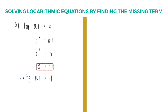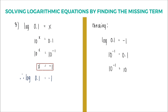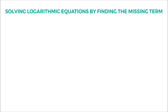Therefore, logarithm of 0.1 is equal to negative 1. To check, substitute x into the logarithmic equation to get logarithm of 0.1 equals negative 1, then convert to exponential form: 10 raised to negative 1 equals 0.1. Changing the right-hand side to scientific notation gives 10 raised to negative 1, so 10 raised to negative 1 equals 10 raised to negative 1 — the answer is correct.